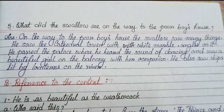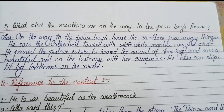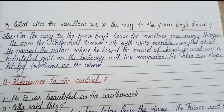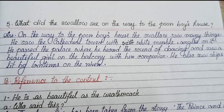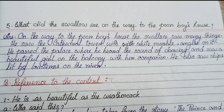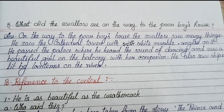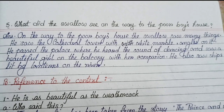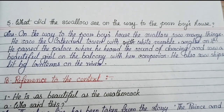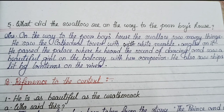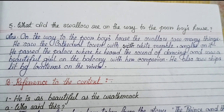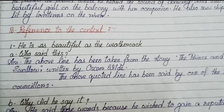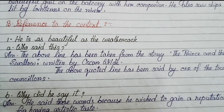Number five: What did the swallow see on the way to the poor boy's house? On the way to the poor boy's house, the swallow saw many things. He saw the cathedral tower with white marble angels on it. He passed the palace where he heard the sound of dancing and saw a beautiful girl on the balcony with her companion. He also saw ships lit by lanterns on the river.